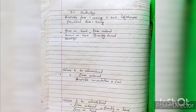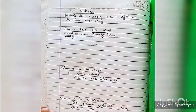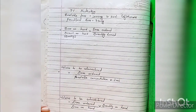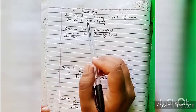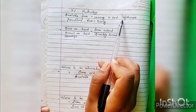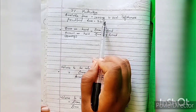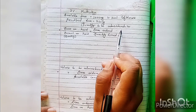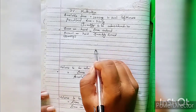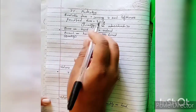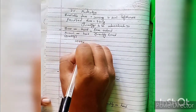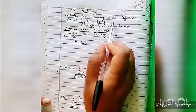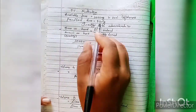Let's look at IV medication. I will use this formula as well. The question is: suppose the available dose is 1000 mg in 20 mL of solution. Dose on hand is 1000 mg, quantity on hand is 20 mL, and dose ordered is 750 mg.